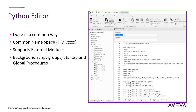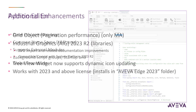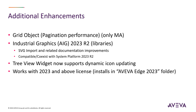In addition to that, we've added some other functionality. We've improved our grid object. We've added the industrial graphics 2023 R2 libraries, which support SVG imports. We've improved our tree view widget to support dynamic icon updating, and it works with the Aviva 2023 Edge license and above.